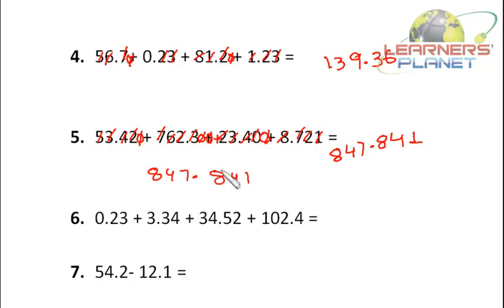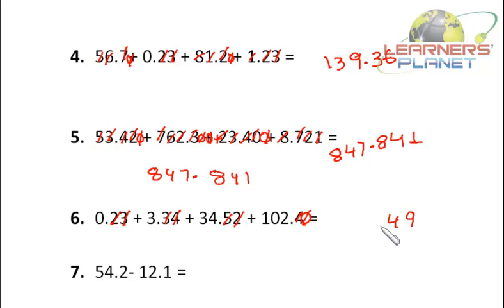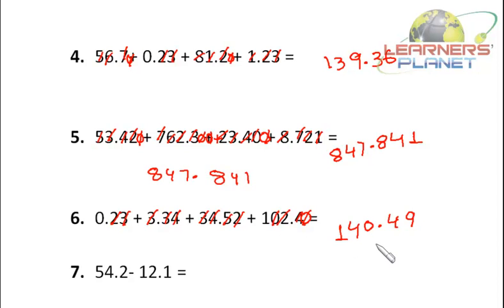Now let's see this problem. I put a zero here. Let's begin: 3 plus 4 is 7, plus 2 is 9 — write 9. Next, 2 plus 3 is 5, plus 5 is 10, plus 4 is 14 — write 4, carry 1. I put the decimal. Then 1 plus 3 is 4, plus 4 is 8, plus 2 is 10 — write 0, carry 1. Then 1 plus 3 is 4, and then 1. The final answer is 140.49.